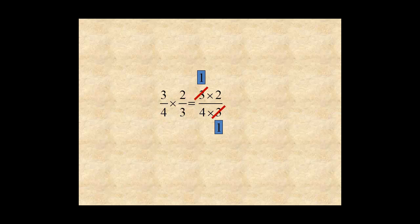Also, you have even numbers in the numerator and denominator. So in the numerator, 2 divided by 2 is 1, and in the denominator, 4 divided by 2 is 2. Now, when you multiply, you get the same answer.